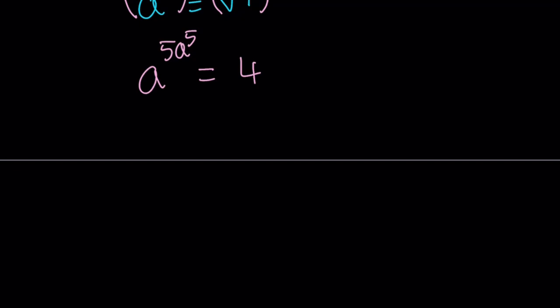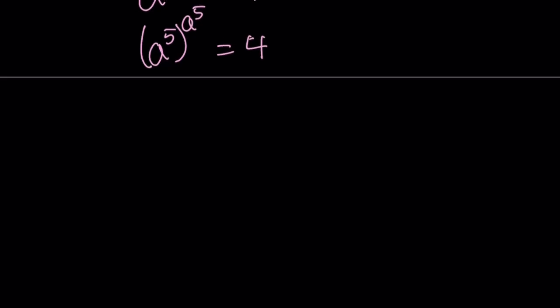Now, what can I do with this? You see that 5? I can put it inside, using properties of powers. And write this as a to the fifth to the power a to the fifth. Which means, they are the same, the base and the exponent. And the result is 4. This implies that a to the fifth equals 2. And from here, a becomes the fifth root of 2 as before.